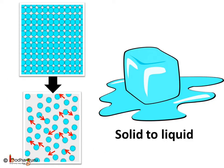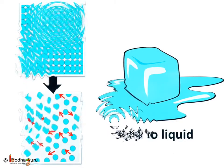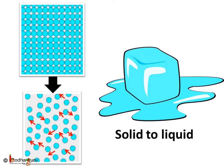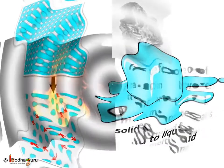When we heat a solid, its particles vibrate more strongly. There is a strong force of attraction between the particles of a solid. The energy supplied by heat overcomes the forces of attraction between the particles. Hence the particles leave their places and start moving more freely — now the matter is in liquid state.